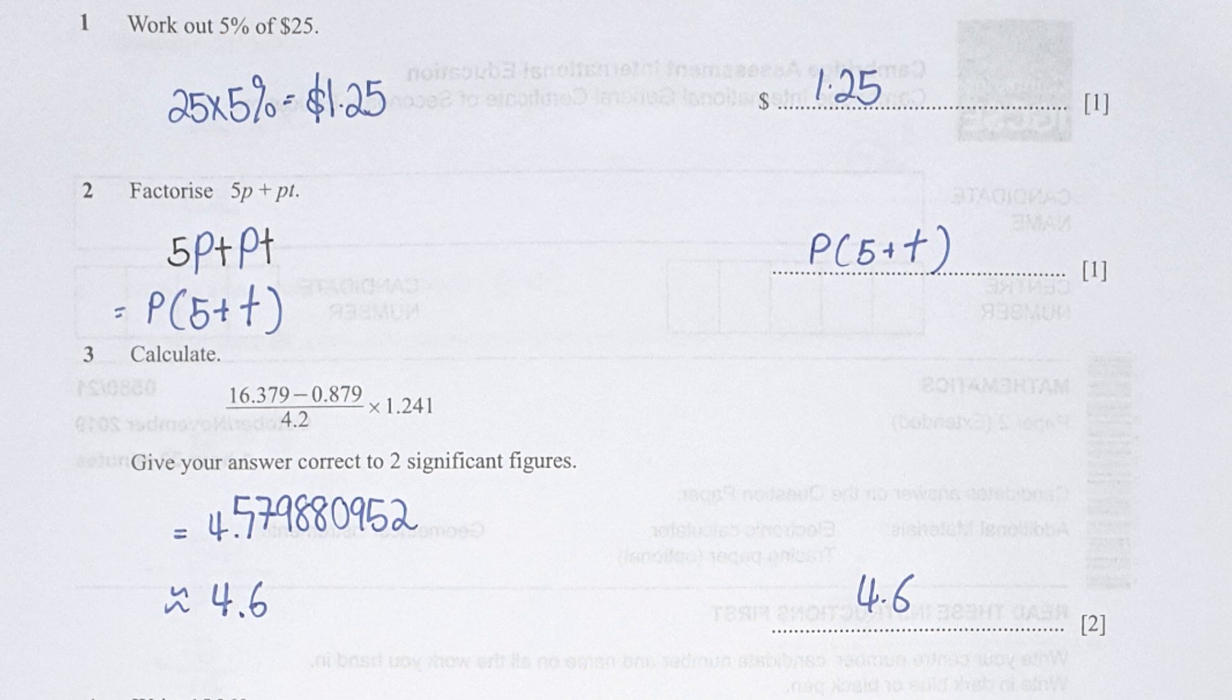Question 3, basically type in everything into a calculator, then correct the answer to two significant figures. So the second number here is 5, so let's look at numbers behind of it which is more than 5, hence I round it to 4.6.